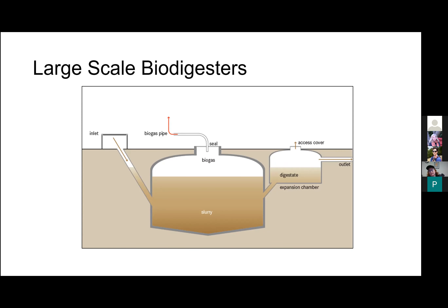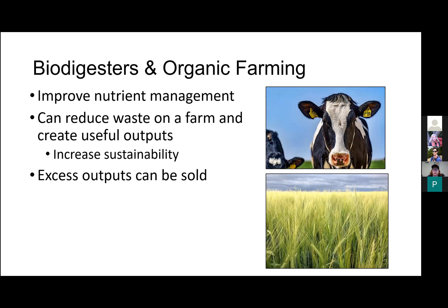A biodigester has an inlet where things go in, an outlet where bio fertilizer comes out, a main holding tank where everything happens, expansion chambers if necessary, and a pipe where biogas leaves. The main holding tank contains both the effluent and the biogas, which is important to keep in mind when designing a biodigester. Biodigesters are applicable to organic farming for their improvement of nutrient management, keeping soil healthy and fertile, and maintaining a healthy microbial environment.